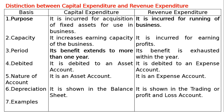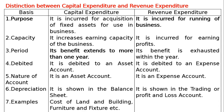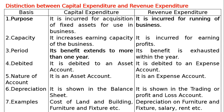The seventh basis is examples. Examples of capital expenditure are cost of land and building, furniture and fixture, plant and machinery, motor cars, etc. Whereas, examples of revenue expenditure are depreciation on furniture and fixture, depreciation on land and building, salary paid, rent paid, rent payable, etc. These are the distinctions between capital expenditure and revenue expenditure.